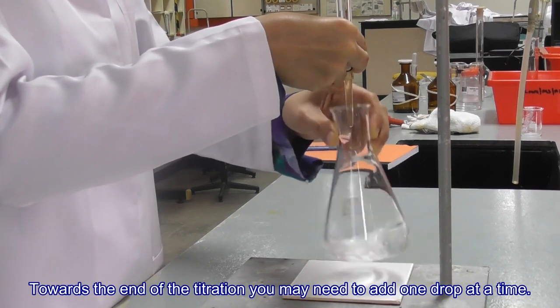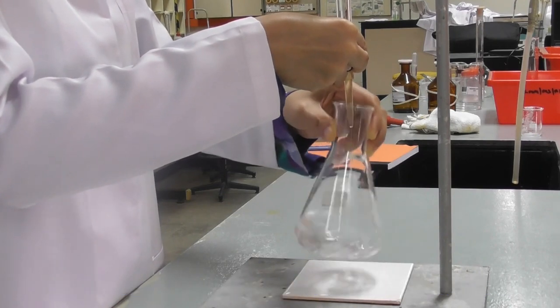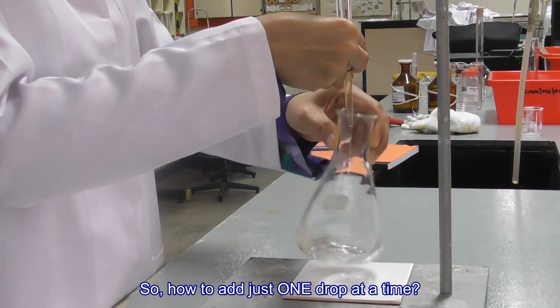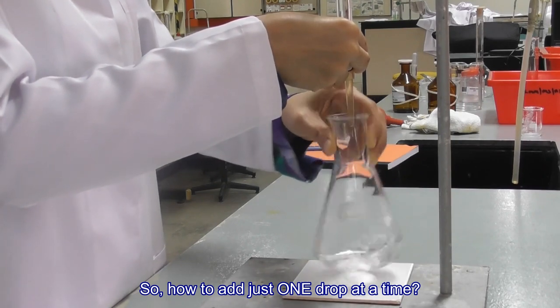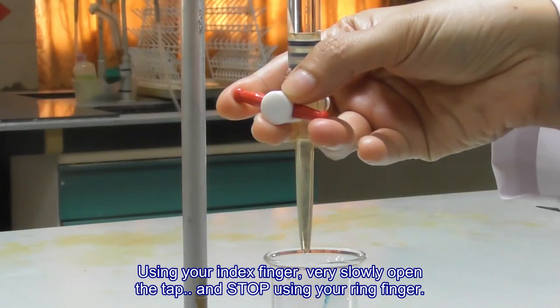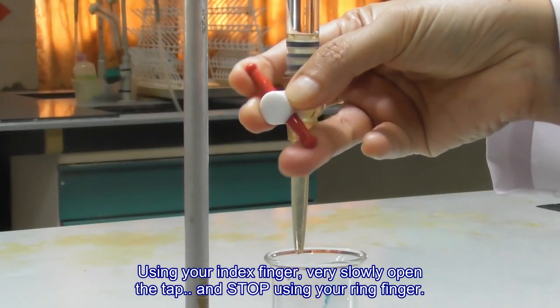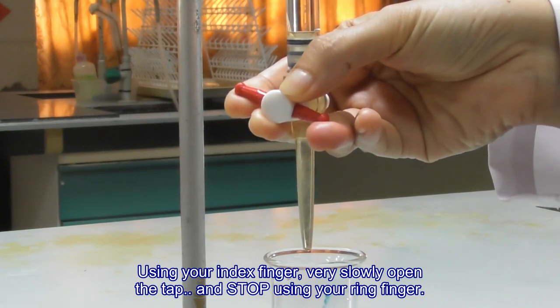Towards the end of the titration, you may need to add one drop at a time. So how to add just one drop at a time? Using your index finger, very slowly open the tap and stop using your ring finger.